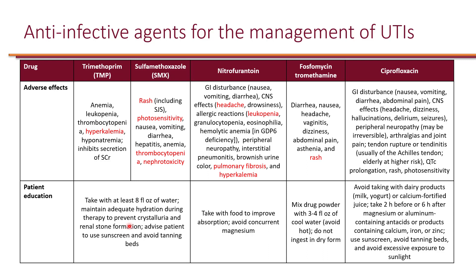Nitrofurantoin can cause GI disturbances and CNS effects such as headache and drowsiness. It can also lead to allergic reactions presenting as leukopenia, granulocytopenia, eosinophilia, and hemolytic anemia — the latter particularly in patients with glucose-6-phosphate dehydrogenase deficiency. Additionally, it can cause peripheral neuropathy, interstitial pneumonitis, brownish urine discoloration, pulmonary fibrosis with chronic use, and hyperkalemia. It is recommended to take nitrofurantoin with food and avoid concurrent magnesium products, which reduce absorption.